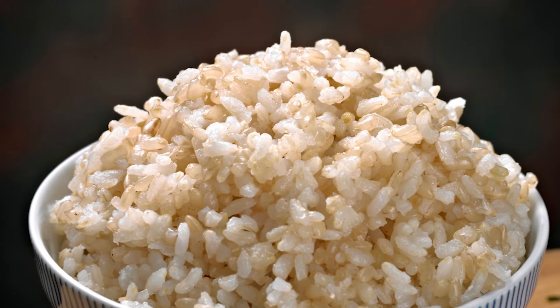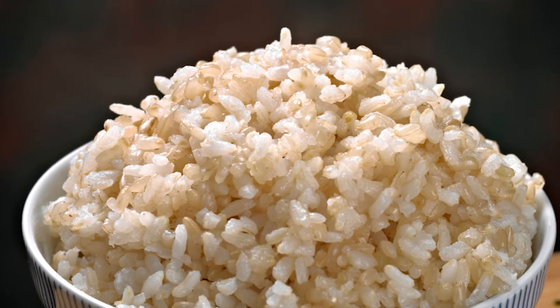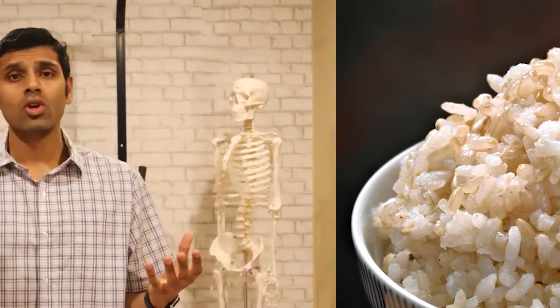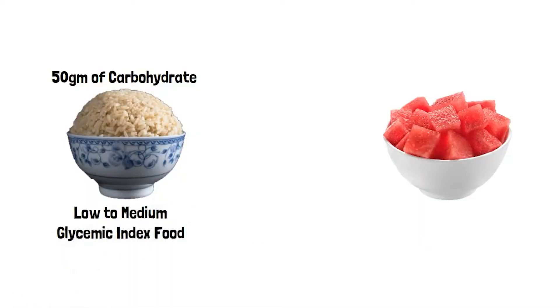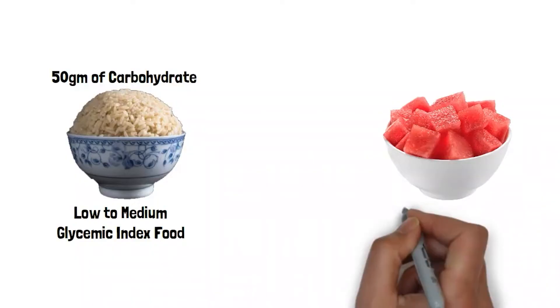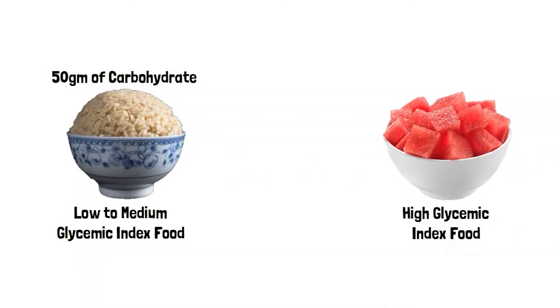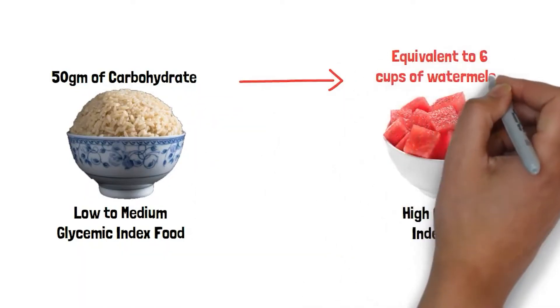One cup of brown rice has around 50 grams of carbohydrate — and believe it or not, one cup of brown rice is not that big a serving. That one cup of brown rice is considered a low to medium glycemic index food. Watermelon, on the other hand, is considered a high glycemic index food, yet in order to get 50 grams of carbohydrate from watermelon, you need to eat around six cups.